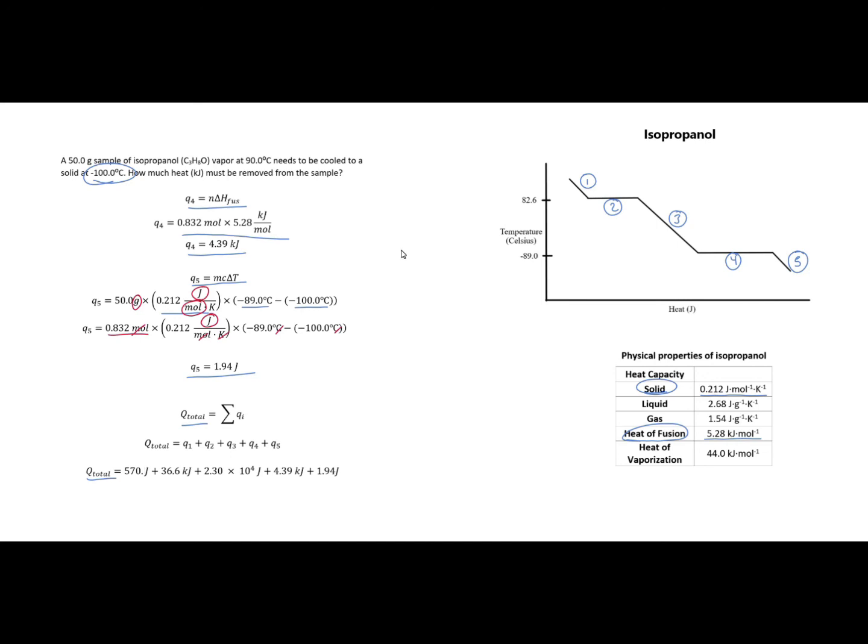But here I have another unit issue. Some of these units are in joules and some are in kilojoules. I cannot add those together as they are. I am going to convert all of my joules to kilojoules. Here is my Q total. All of my units are the same, all kilojoules. I simply add those all up and I get a total value for the heat that has been removed from this sample.